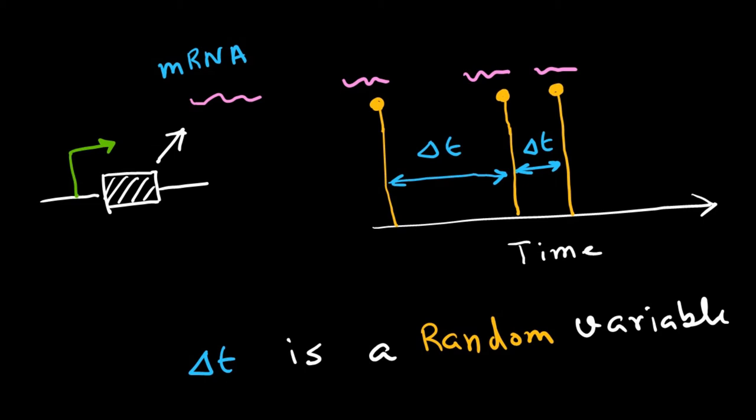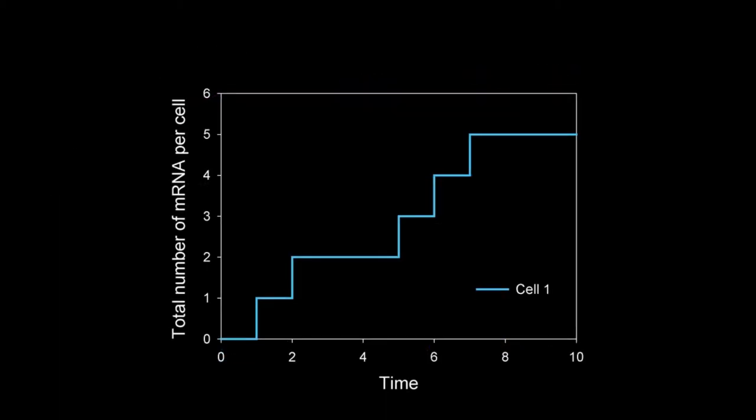As transcription is stochastic, we have uncertainty when the next copy of the mRNA will be produced. The time interval between the production of two mRNA is a random variable. Therefore, the data collected from a single cell will not be smooth, but it should look like a stair plot. Now check two other cells. The dynamics will be different.